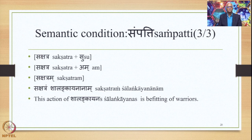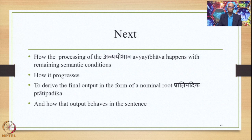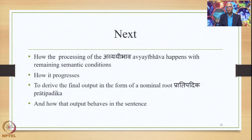So, we have studied four semantic conditions today: Yaugapadya, Anupurvyya, Sadrushya, and Sampatti. One of the key points here is that Sadrushya means Sadrusha in this context. There is a difference between Sampatti and Samruddhi. Next, we study how the processing of the Avyayibhava Samasa happens with the remaining semantic conditions in this particular Sutra as well as other Sutras, and how this process progresses to derive the final output in the form of a Pratipadika, and how that output — Pratipadika plus Su — behaves in the sentence.